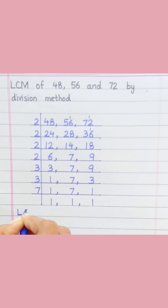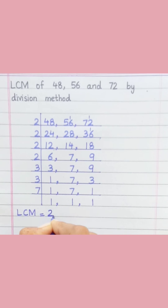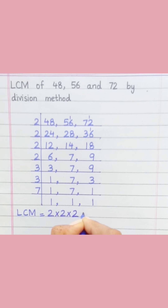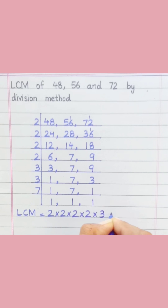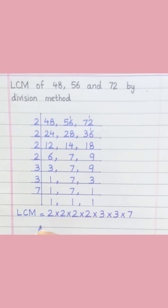LCM equals 2 × 2 × 2 × 2 × 2 × 3 × 3 × 3 × 7 = 1008.